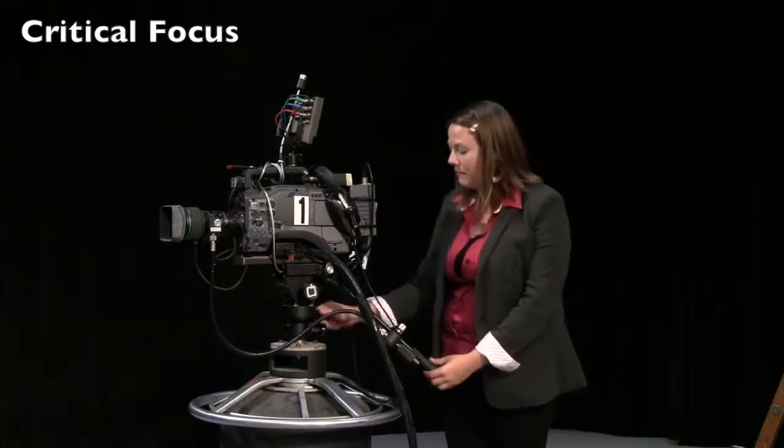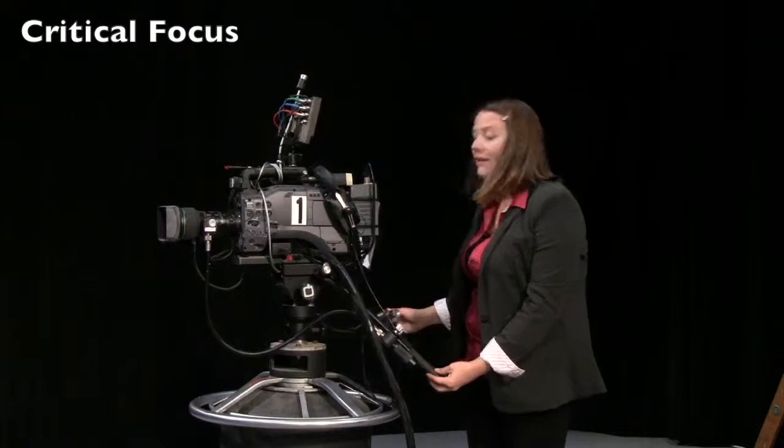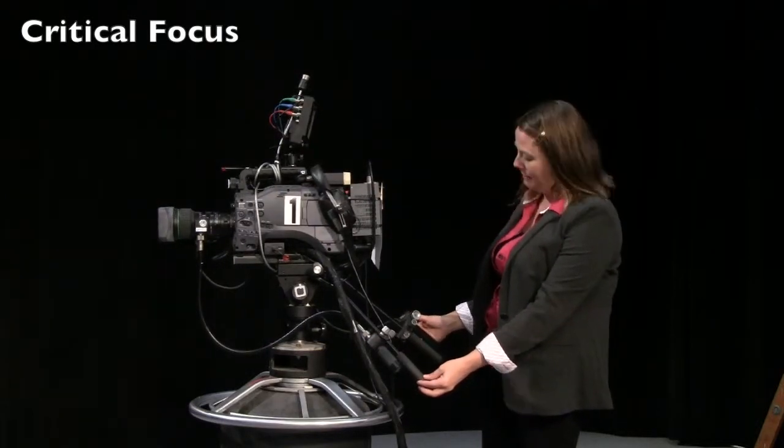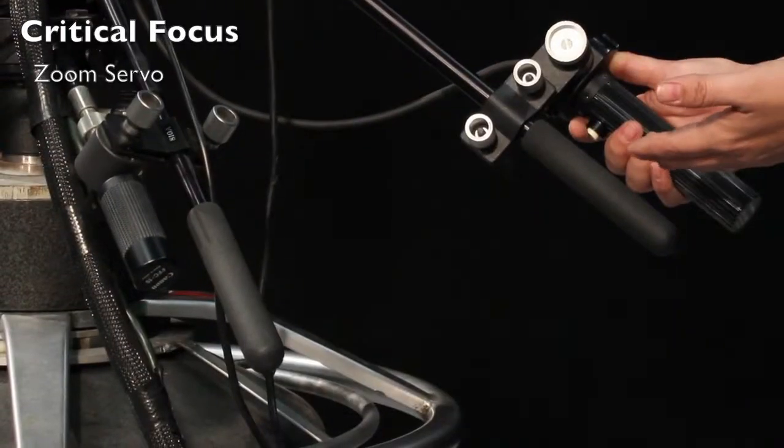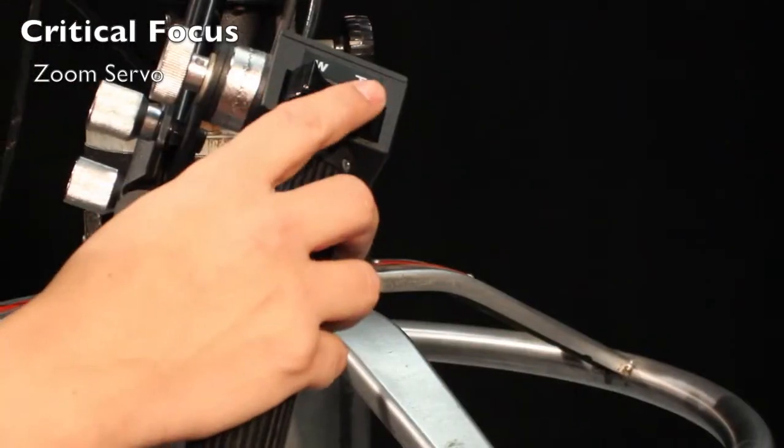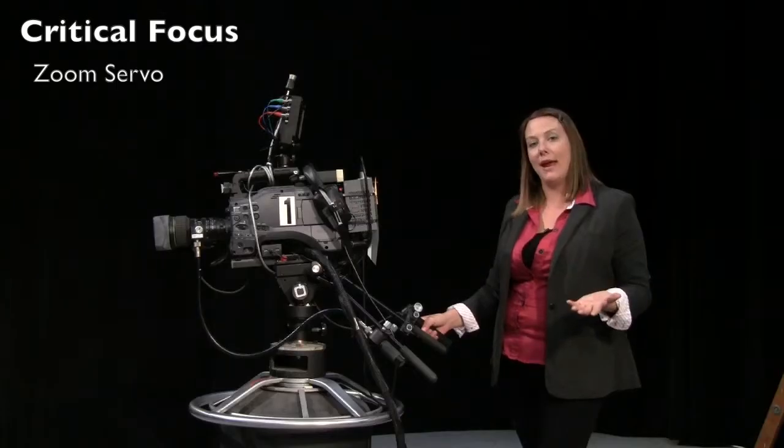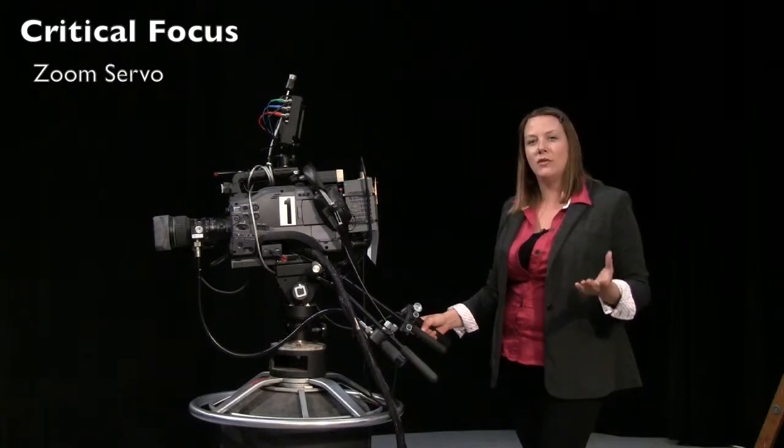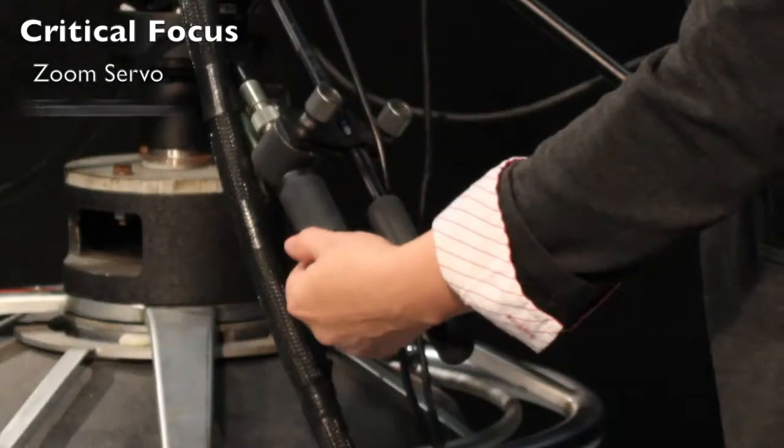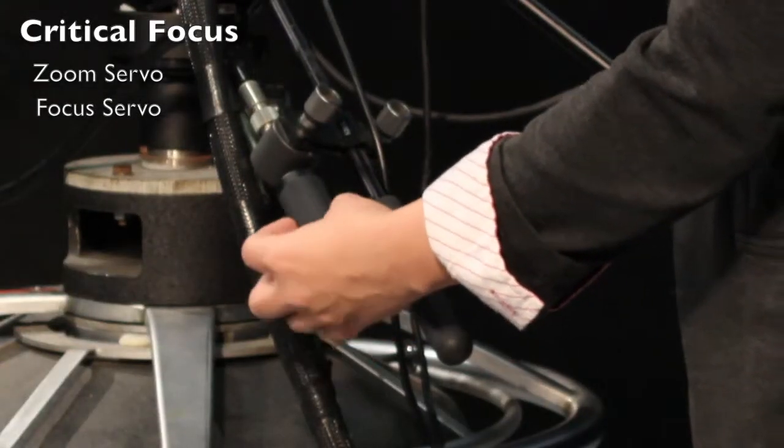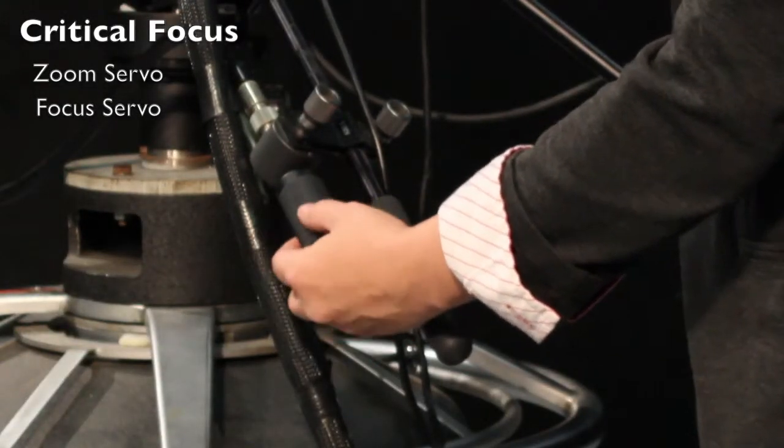Next step is to make sure you understand how to get critical focus. You're going to want to make sure that you use a narrow angle lens position. You zoom all the way into a subject using your zoom servo on the right side. When you zoom all the way in, you have a narrow angle lens position, which allows you to have a very shallow depth of field. Then you would rack your focus, the focus servos on the left, which would allow you to get nice sharp focus on our subject.